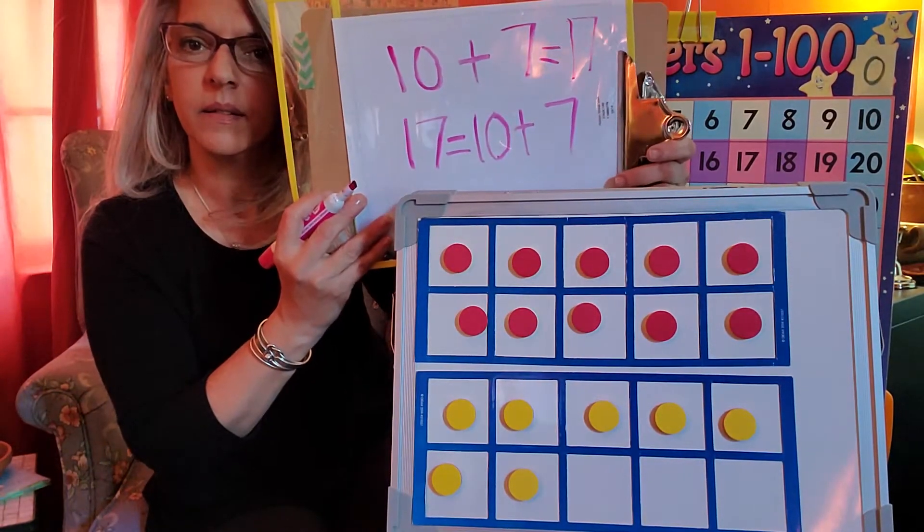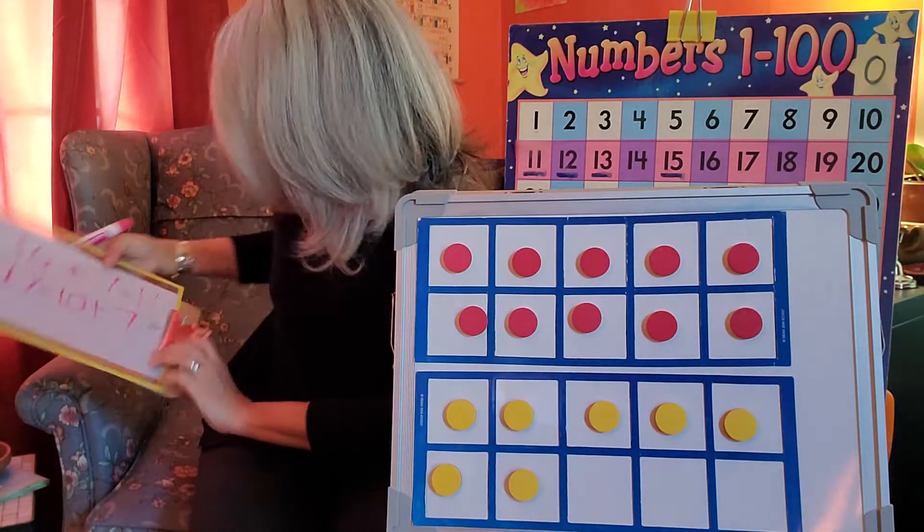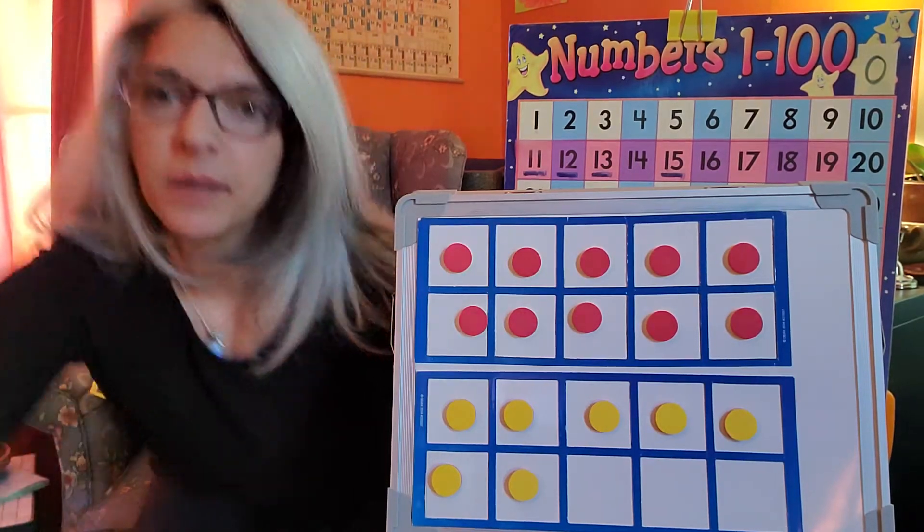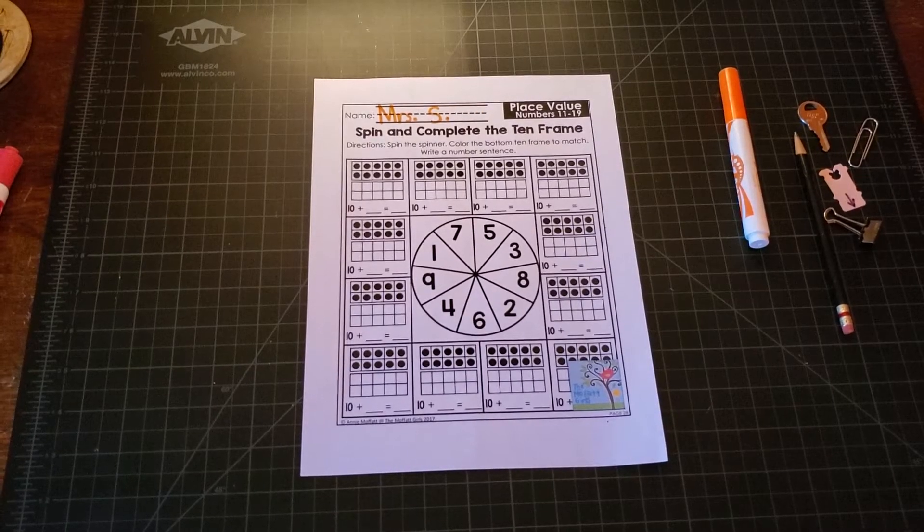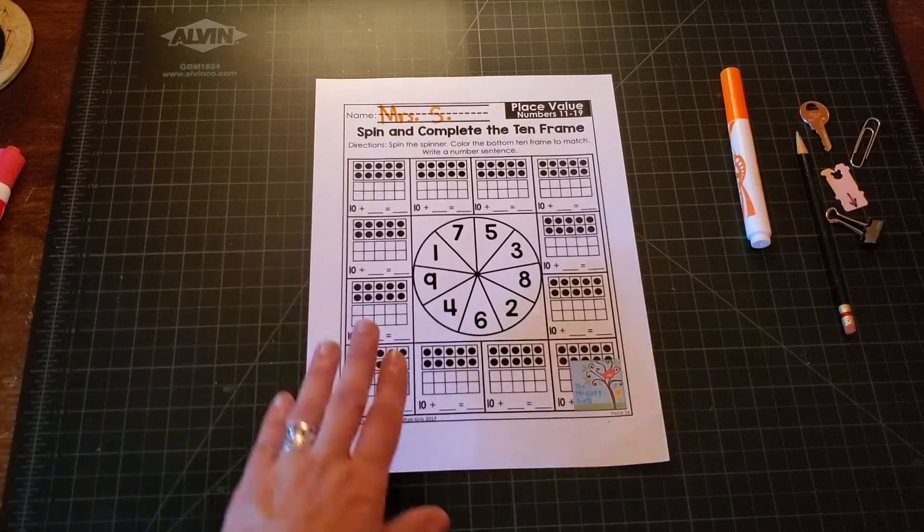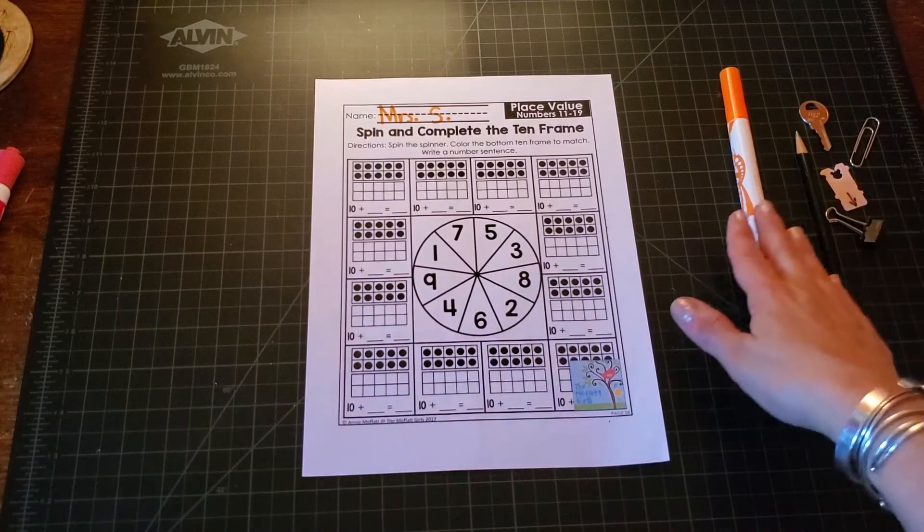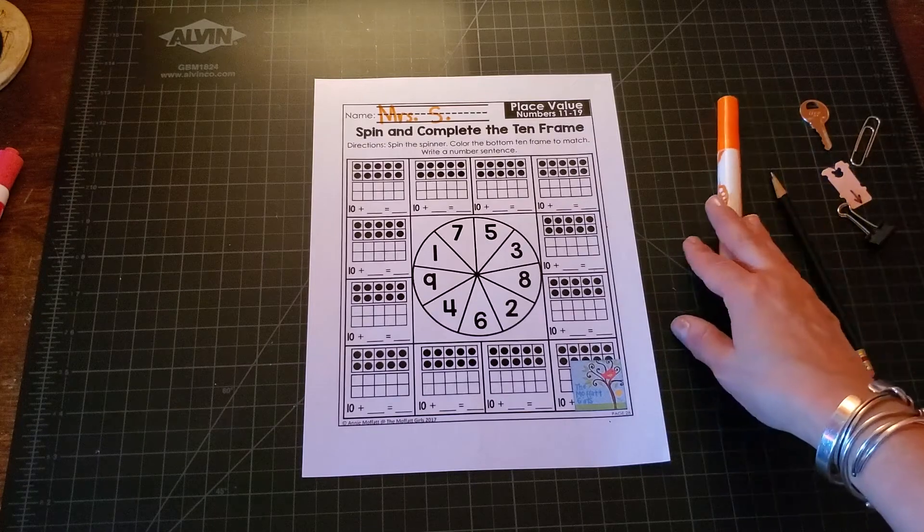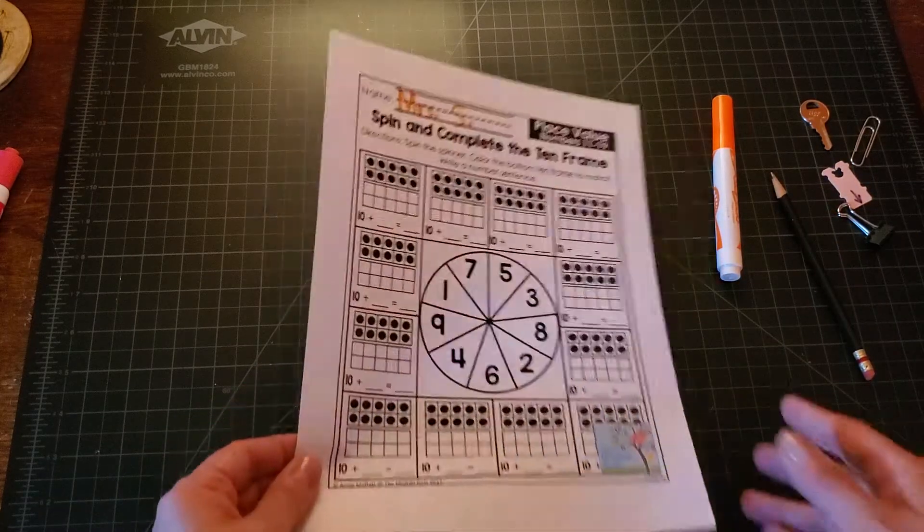Alright so I'm going to show you the spinner game. I just need to move the camera for a minute. Okay, for this spinner game you're going to need this piece of paper, something to write with, and some objects to make your spinner with.